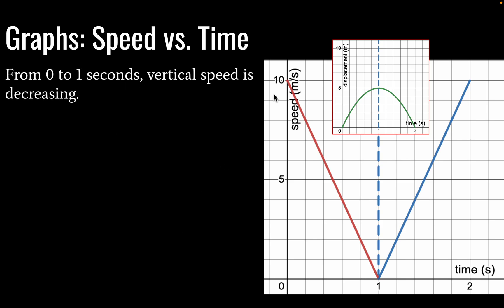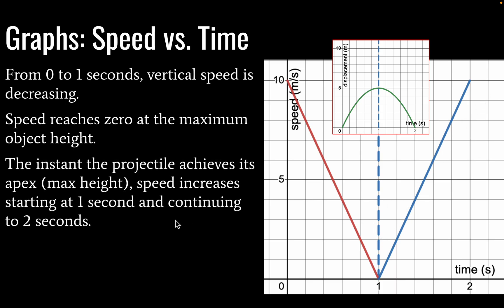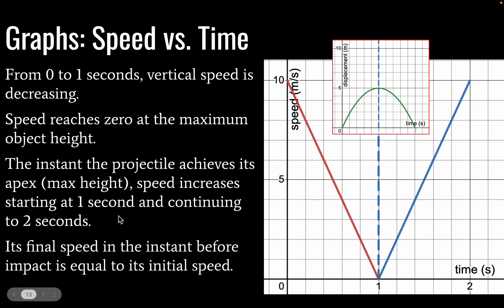Okay, so from zero to one seconds, vertical speed is going to decrease. This is a speed versus time graph now. And then the speed will reach zero at the maximum object height. And speed can only be positive because it does not have a direction. So that is why it comes back up. And from one to two seconds, we have an increase in speed.